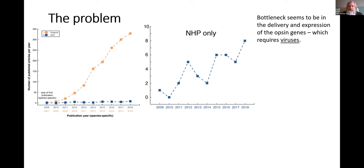We think that the main bottleneck here is in the delivery and expression of these opsin genes into the primate central nervous system. In primates, you don't have the luxury of transgenic animals. You have to use viruses to get these genetic constructs into the brain. Viral vector efficacy is unreliable between labs in the primate realm, and even within labs.